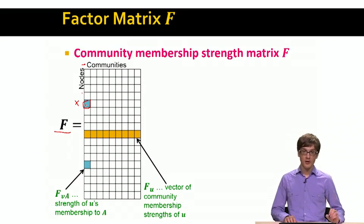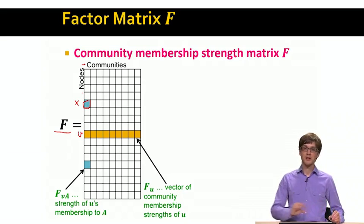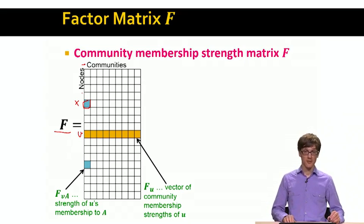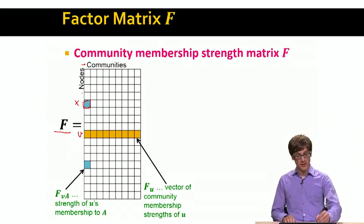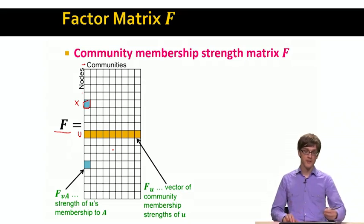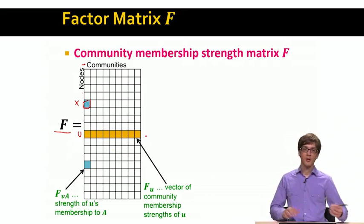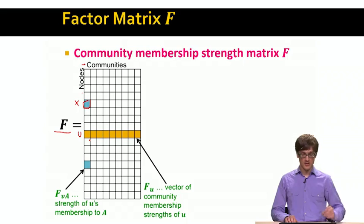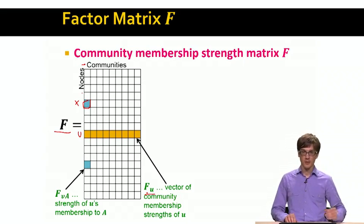If we think of a single row as a description of what communities a given node is a member of and to what strength, this completely specifies the community structure of our network. For every node, we know what communities it belongs to, and we can think of every row as a vector of community membership strengths for that node.